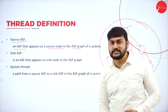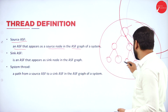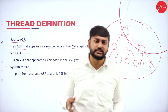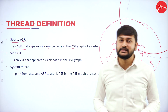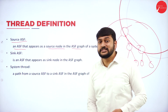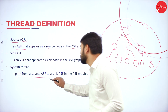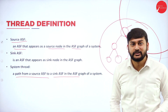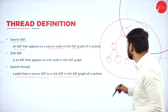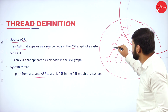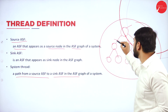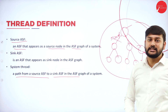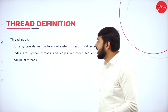When it comes to sync ASF, the leaf nodes at the last level are what I call sync ASF — the sink nodes are the sync ASF. A system thread is a path from a source ASF to a sync ASF in the ASF graph. So the path from source ASF to sync ASF is what I call a thread in the ASF graph.